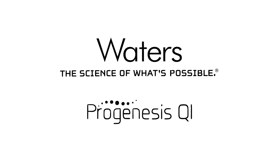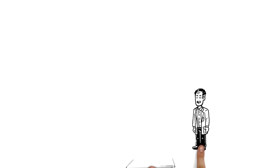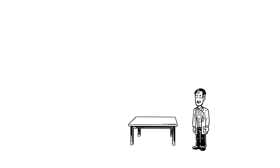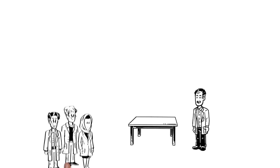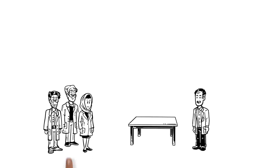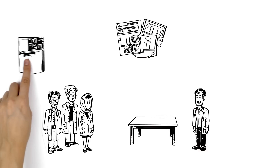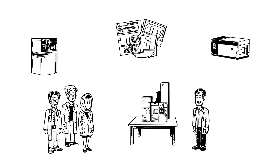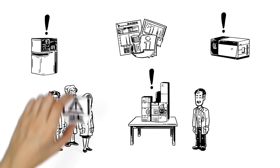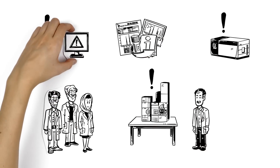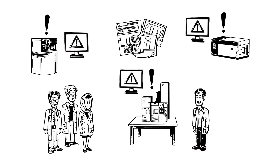Waters explains Progenesis QI Software. Meet Michael, the head of a research lab. On a daily basis, Michael and his associates are running different projects from an array of instruments from different companies. Each instrument has its own software, which makes it very complicated to manage.